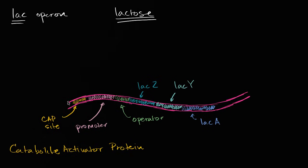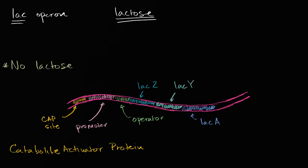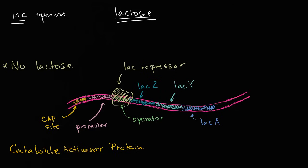Let's think about a scenario where the E. coli is in an environment with no lactose. A lot of these things are very logical if you assume biological organisms are quite stingy and don't want to waste resources. If there's no lactose, why transcribe genes that encode enzymes for lactose metabolism? So in this default state, the lac repressor protein is bound to the operator, and the RNA polymerase won't be able to perform transcription. No lactose means no transcription, which makes sense — the bacterium doesn't want to waste resources.